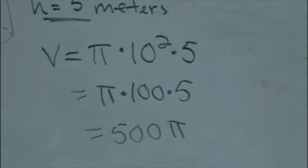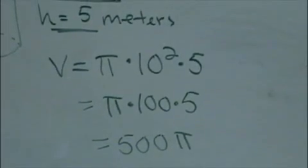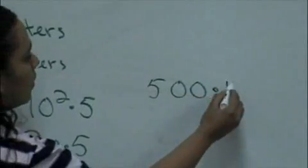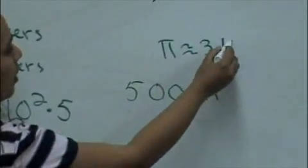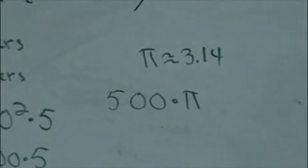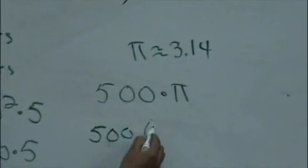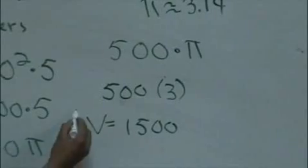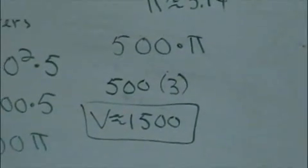But let's say our answer is not in our multiple choices. So then we can go ahead and multiply 500 times pi. And pi is about 3.14. Now, again, remember that it's a multiple choice test. So we can go ahead and just take some test-taking strategies. So we can just multiply 500 times 3, which is... So our answer is going to be approximately about 1,500 for the volume.